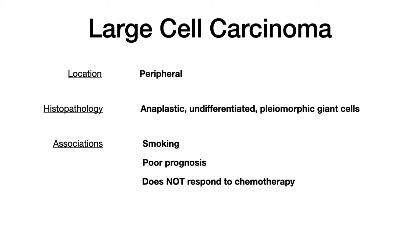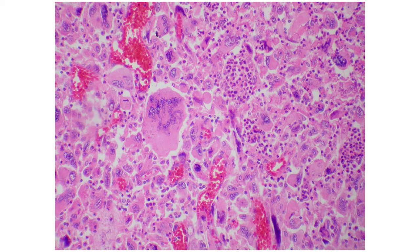A few other associations: large cell carcinoma is associated with smoking and has a pretty poor prognosis. Test writers sometimes incorporate the fact that large cell carcinoma responds poorly to chemotherapy — if you see that, pick large cell carcinoma. But the most important thing about large cell carcinoma for USMLE and COMLEX is being able to recognize those pleomorphic giant cells on a histopathology slide — that's the classic finding.